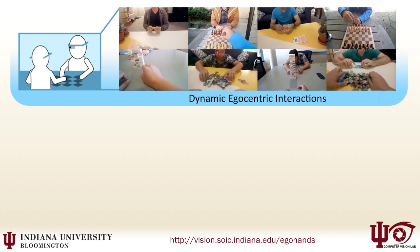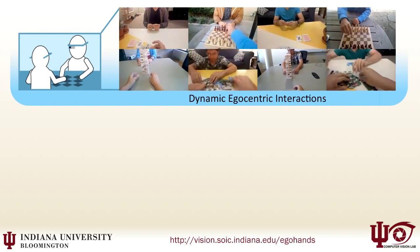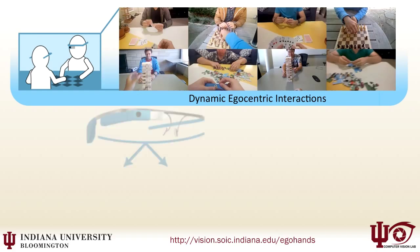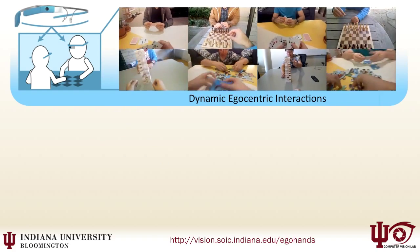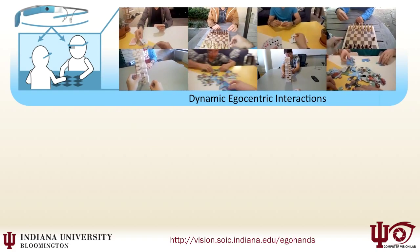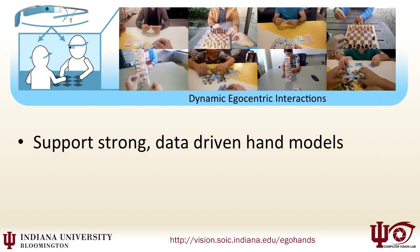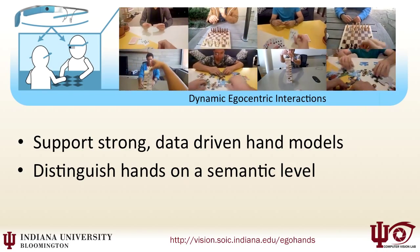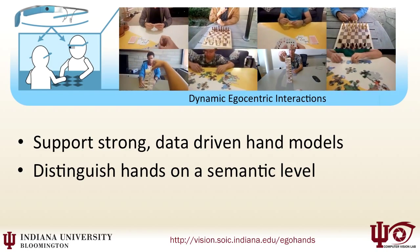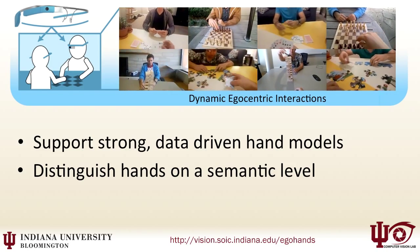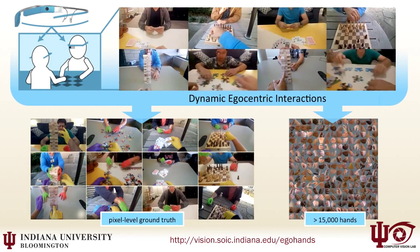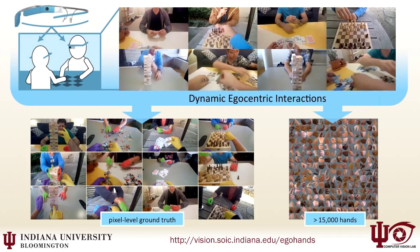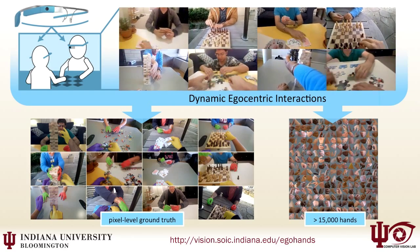We present a new dataset containing 48 videos of dynamic interactions between two people wearing Google Glass, in order to build strong, data-driven models that can detect as well as distinguish hands — like telling apart the observer's hands from any others in view. The dataset includes more than 15,000 labeled hand instances with pixel-level ground truth.